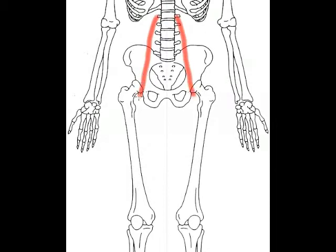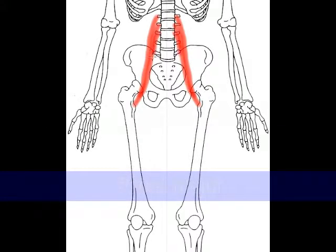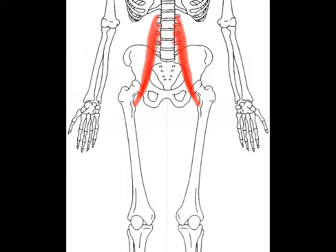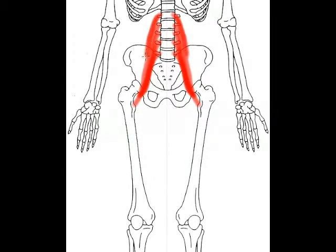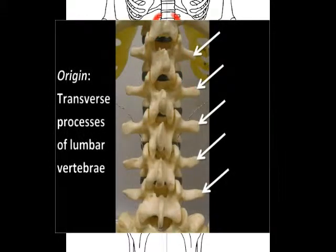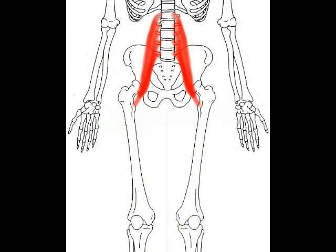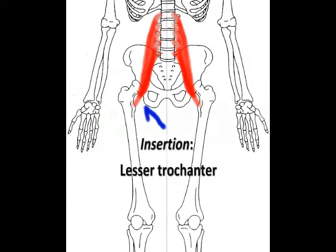Our next muscle is the psoas major, making up the iliopsoas muscle group along with the iliacus muscle. Psoa is a name that refers to the loin as in tenderloin. The psoas major originates along the transverse processes and bodies of all five of the lumbar vertebrae and inserts onto the lesser trochanter of the femur along with the iliacus.